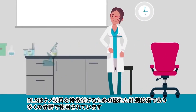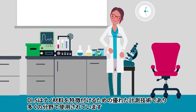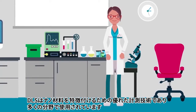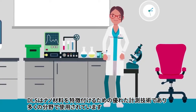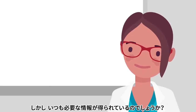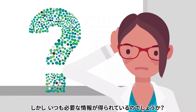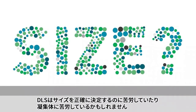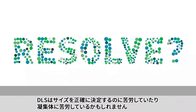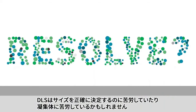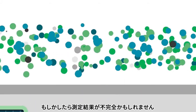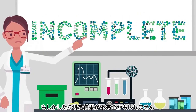If you use dynamic light scattering in your laboratory, you'll know that it's an excellent tool for characterizing the size of proteins, polymers, colloids or nanomaterials. However, does it always give you the information you need? Perhaps DLS struggled to accurately size your protein, or was unable to resolve different populations in your colloidal dispersion. Perhaps you needed a complementary technique to fully understand your sample, and the resulting data picture was still incomplete.